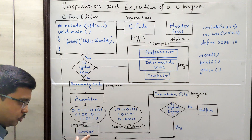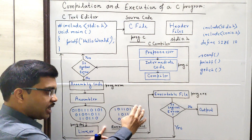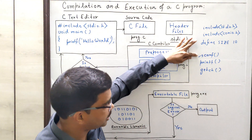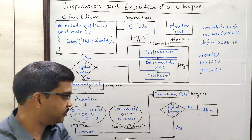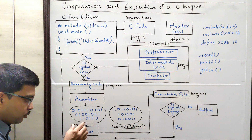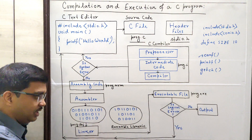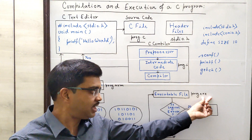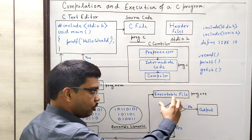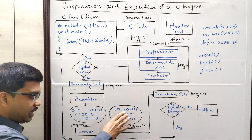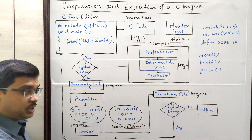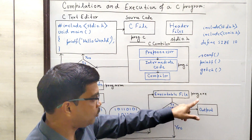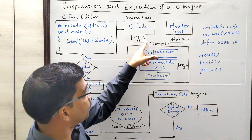Now this object code has to be transferred through the linker. The linker will link the runnable libraries of the C system. In these runnable libraries, whatever system-defined functions we have used — such as scanf, printf, and getch — their function definitions have been written in these C libraries. So these libraries now have to be included along with the object code. When these two are passed and linked through the linker, then the executable code will be generated and saved with the .exe extension. So your executable code will only be generated when the object code is passed through the linker and the runnable libraries of the system are connected to it. Only then will the .exe file — the executable file — be produced. So now we have got program.exe from program.c, which was our source code.